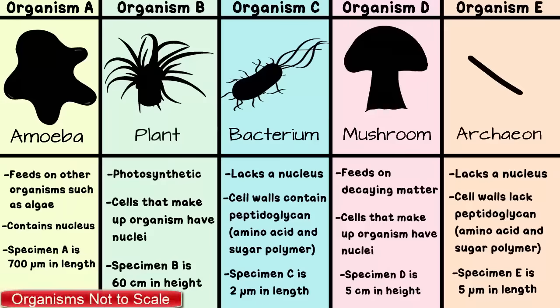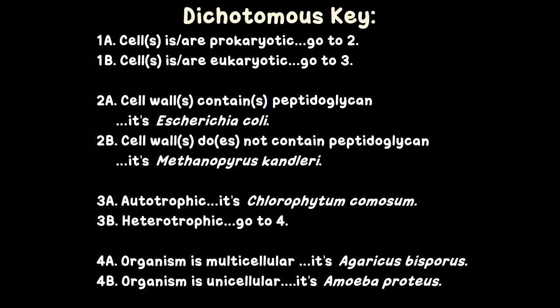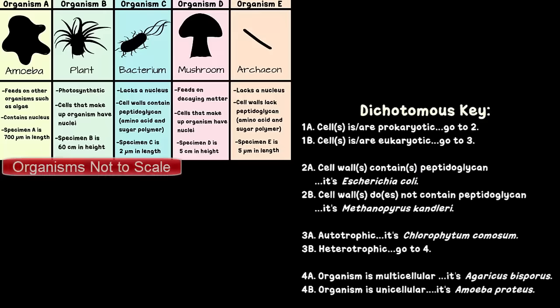Okay, let's go ahead and get started. Here are our mystery organisms with clues. We're going to use this dichotomous key. Now, this dichotomous key has been created for use with these five specific organisms in the chart, and only these specific organisms.